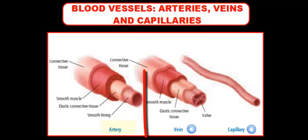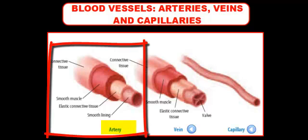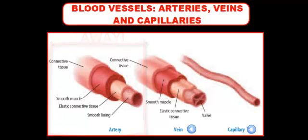First, we have the artery. The artery is the thickest vessel of the three because it has to withstand a lot of pressure. It carries blood away from the heart, and as the heart squeezes and forces blood out at extremely high pressure, the thick walls of the artery prevent it from rupturing and bursting, keeping the blood inside the tubes.